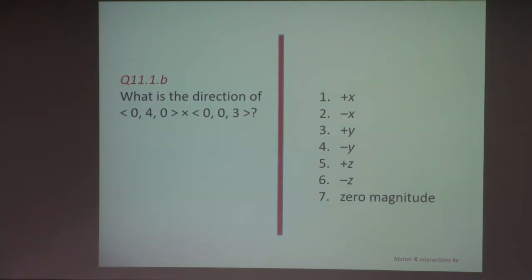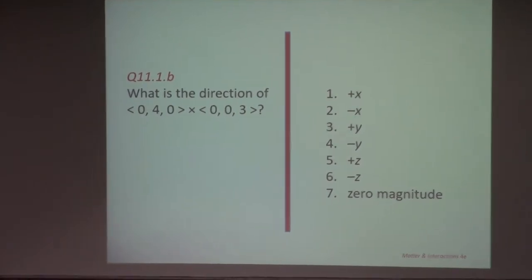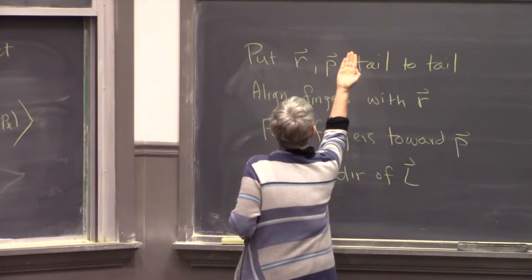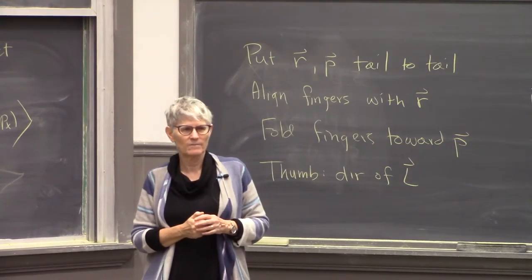For a second problem, most people are saying the answer is 1 — plus x — and that's correct. The first vector is in the plus-y direction and the second vector is in the plus-z direction; the thumb sticks out in the plus-x direction.